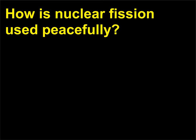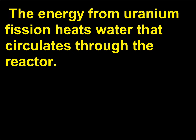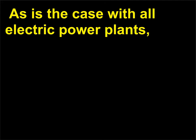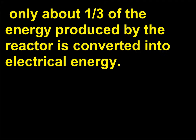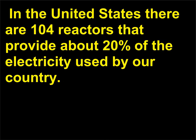How is nuclear fission used peacefully? Nuclear reactors produce electric power. The energy from uranium fission heats water that circulates through the reactor. The heated water produces steam that turns turbines connected to generators, as is the case with all electric power plants. Only about one-third of the energy produced by the reactor is converted into electrical energy; the remaining energy heats local rivers, lakes, or the atmosphere. In the United States there are 104 reactors that provide about 20% of the electricity used.